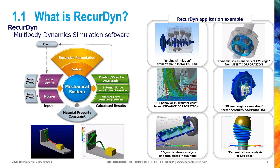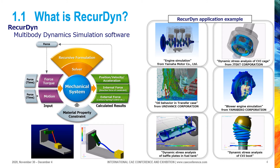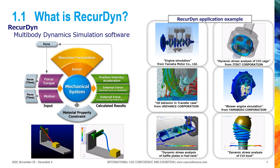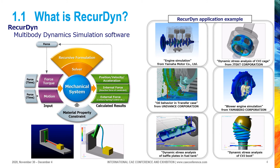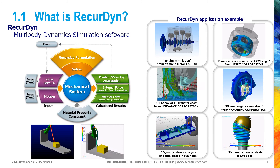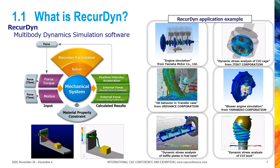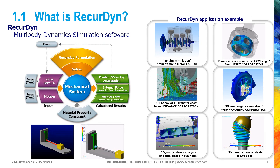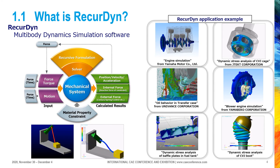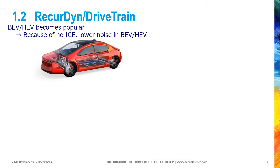Application examples in the automobile field are shown on the right side of this page. As you can see, Ricardine can be used for various types of motion analysis. Next, I'd like to introduce a new function of Ricardine to simulate gear transmission system behavior.